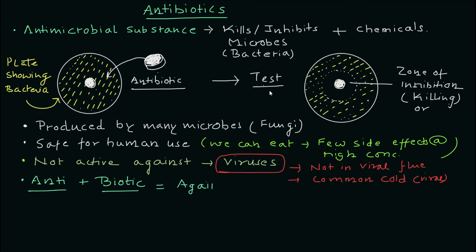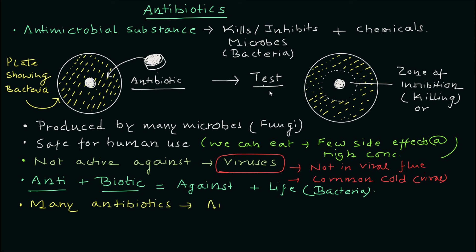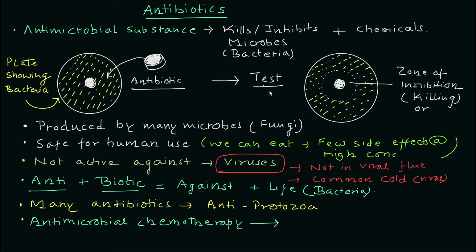The common term used for these chemical compounds is 'anti' plus 'biotic': anti means against, biotic means life. Life could be fungus or other organisms, but these compounds are usually more targeted against bacteria. Many antibiotics are also active against protozoans, so you'll find in the literature that many antibiotics have antiprotozoal activity. Antimicrobial chemotherapy is another important term — it includes not just antibiotics, but also antiseptics, detergents, and other chemical compounds that are antimicrobial in nature.